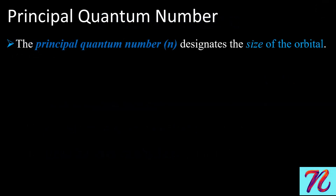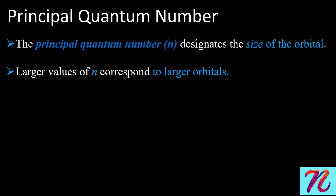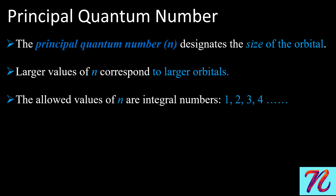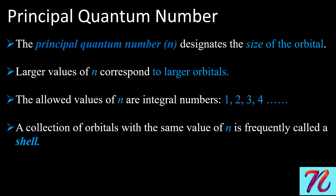The principal quantum number designates the size of the orbital — it gives the size of the orbital. The larger values of n correspond to larger orbitals. The values of n start from n = 1, 2, 3, 4, and so on. A collection of orbitals with the same value of n is frequently called a shell.